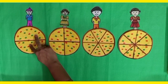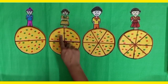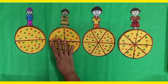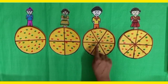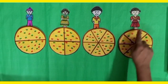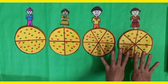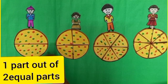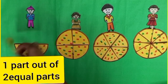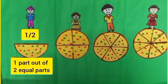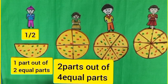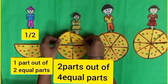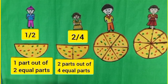Yashnur cut his pizza into two equal slices. Anurit cut her pizza into four equal slices and Deepak cut it into six equal slices, and another person cut it into eight equal slices. Yashnur ate one part out of two equal parts of his pizza — he ate one upon two parts of it. And Anurit ate two parts out of four equal parts of her pizza — she ate two upon four parts of the pizza.